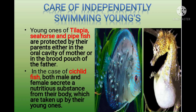The last method of parental care in fishes is the care of independently swimming young ones. Young ones of tilapia, seahorse, and many other pipefishes are protected by their parents either in the oral cavity of the mother or in the brood pouch of the father. In the case of cichlid fishes, both males and females secrete a nutritious substance from their body which is taken up by the young ones. This completes all the patterns and diversities shown by fishes to protect their young ones from danger.